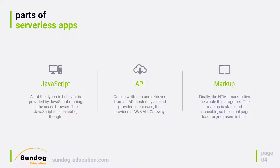Finally, there is the markup — the actual HTML required to render your page. It is static and cacheable, so it comes down very quickly and everybody gets the same thing. Anything that needs to be done dynamically is handled by the JavaScript that's also downloaded. So those are the three main parts of your serverless application: client-side JavaScript that constructs your dynamic HTML, the API gateway that talks to backend services in the cloud, and the actual HTML markup that is served statically to everybody.